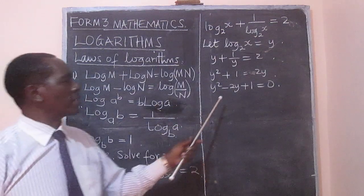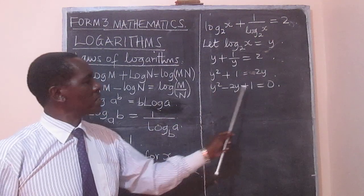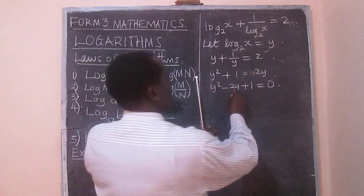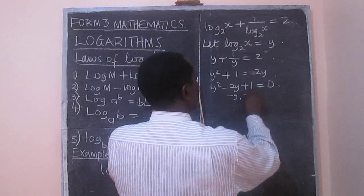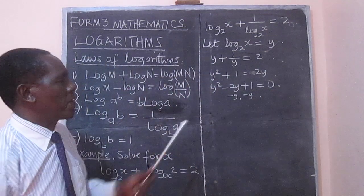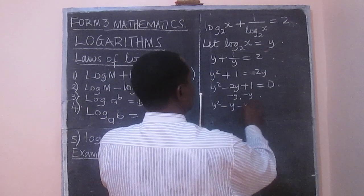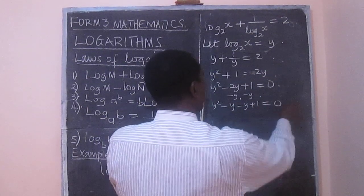We can get the factors. Factors of y squared, which when added will give us minus 2y, and that gives me minus y and minus y. And therefore, we can say, y squared minus y minus y plus 1 equal to 0.